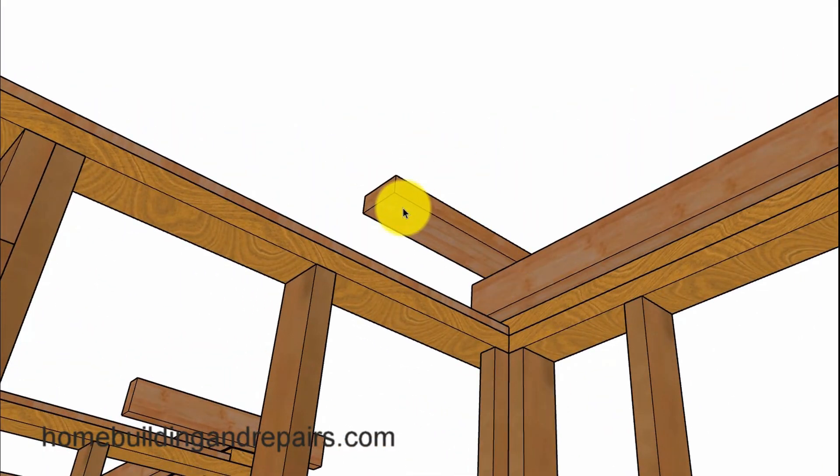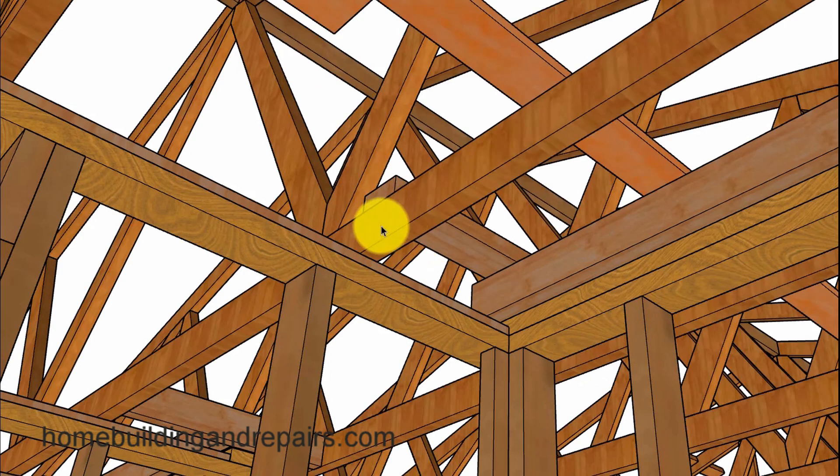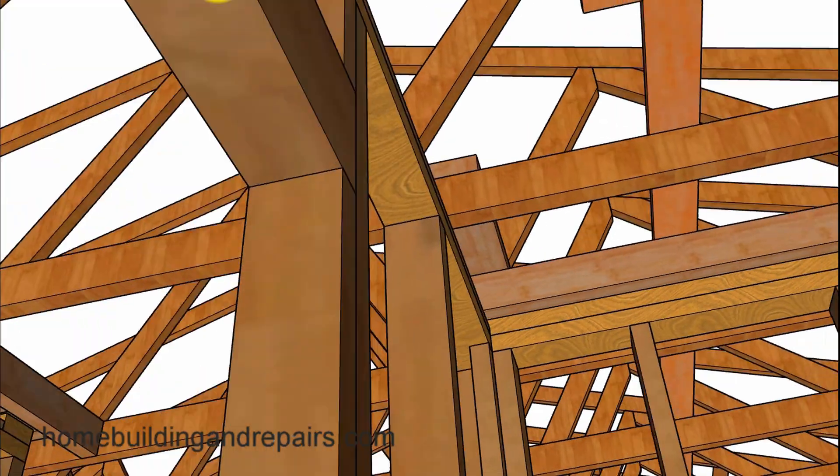You can see here where the truss backing kind of sticks and it's going to sit on top of the roof truss. So we got a 1x4 here. So if the truss goes down, the backing will go down with it. The 2x4 is not going to be in the way because the backing for the ceiling corners is not going to be touching it. It's just going to be floating up and down with the trusses.